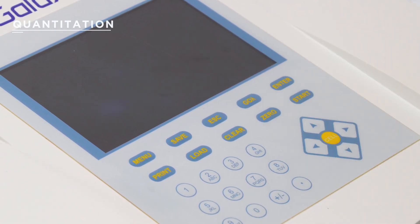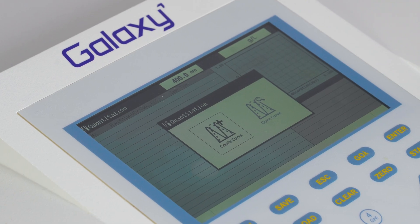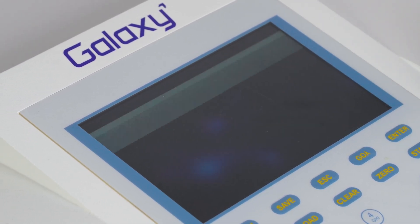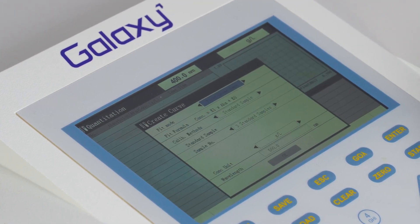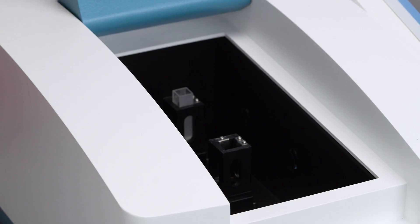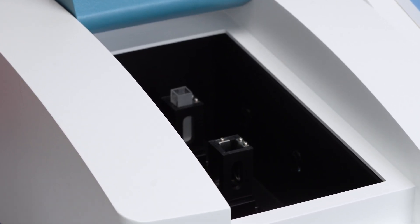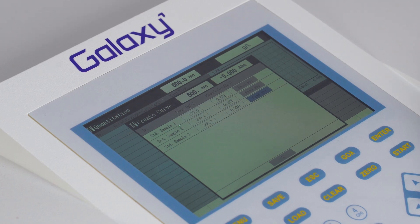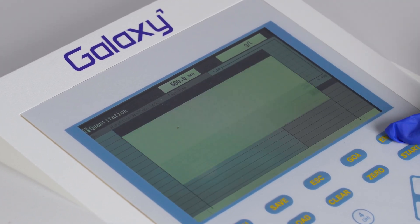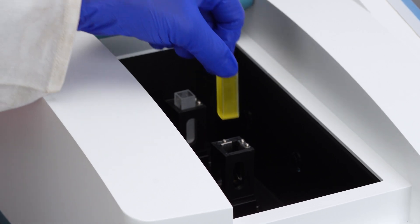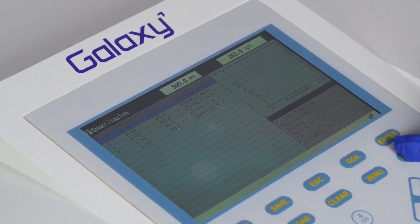Quantitation lets you plot a standard curve for concentration measurements. Select quantitation and input parameters such as fitting method, concentration unit and wavelength. Perform blanking with a blank solution. Measure standards one by one. Once all standards are measured, the curve will be plotted. To measure an unknown sample, blank first, then insert the sample and press start.